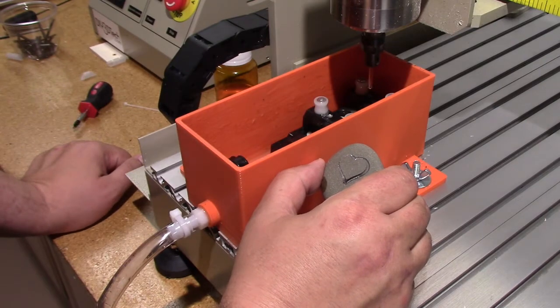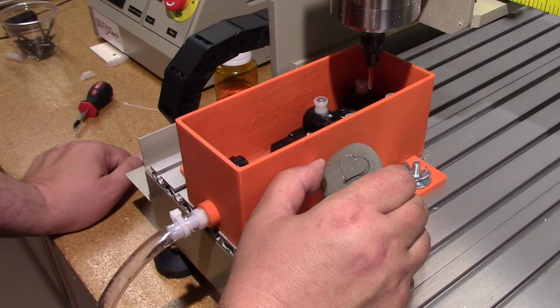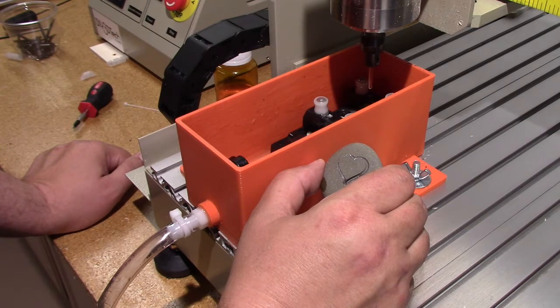Now I cut this at a depth of 0.1 millimeter per pass. I think for a harder stone I might actually cut that even in half and just have it go more passes.